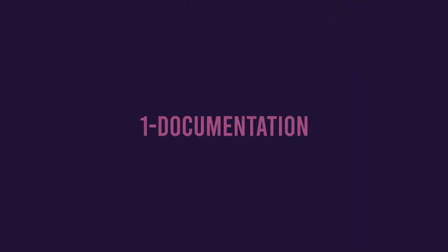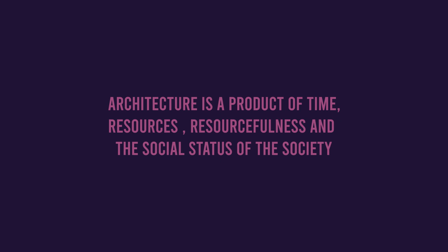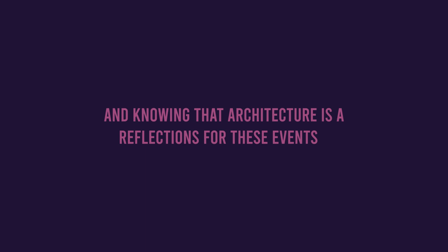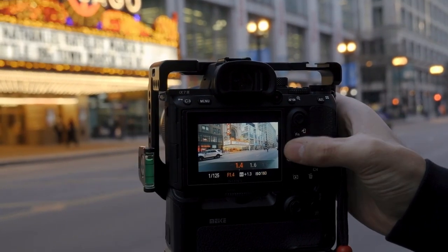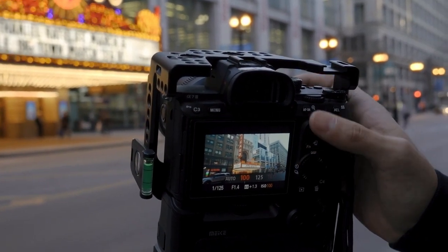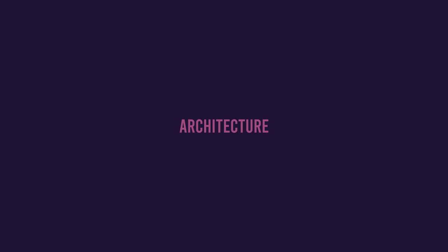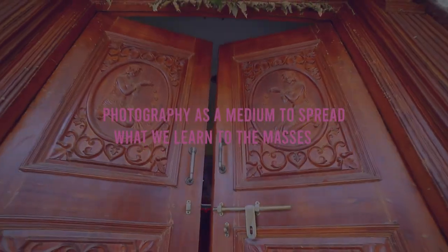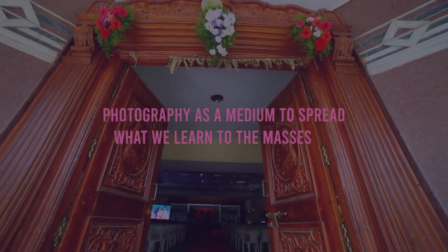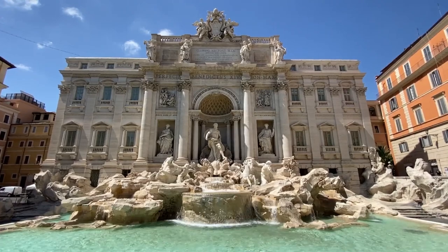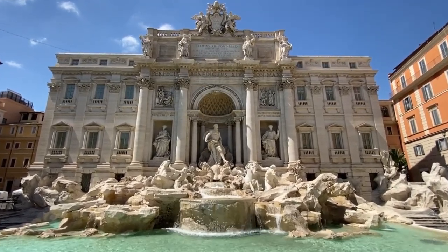Role 1: Documentation. Architecture is a product of time, resources, resourcefulness, and the social status of the society. The current clusters of cities versus suburbia or high-rises versus slums are products of economical and political events and conditions. And knowing that architecture is a reflection of these events, photography is a medium to capture and document the stories and knowledge stored in these buildings. Architecture can be considered a gate to the past, and photography as a medium to spread what we learn to the masses. Thus, photography is a medium to democratize architecture and its accumulated wisdom.